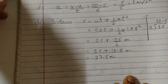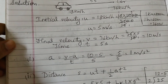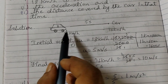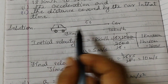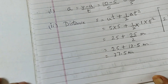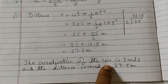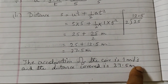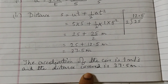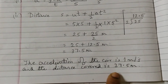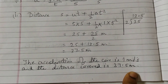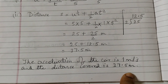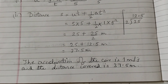So 37.5 meters is the distance traveled by the car. To summarize: the acceleration of the car is 1 meter per second squared, and the distance covered is 37.5 meters. That is the solution for example 7.6 — see you all in the next video, thank you.